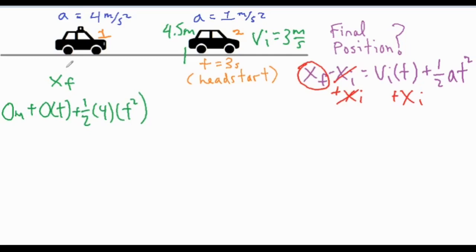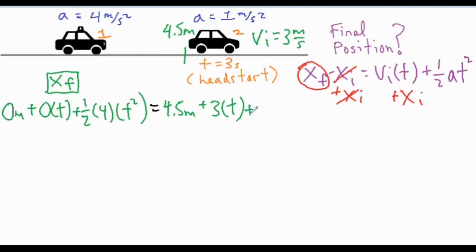That expression is set equal to the final position, and we set it equal to the same expression for the other car. Car two starts 4.5 meters ahead, has an initial velocity of 3 m/s, giving 3t for the v_i·t term, plus ½·a·t². The acceleration is 1 meter per second squared. So the full expression for car two is: 4.5 + 3t + ½·(1)·t².